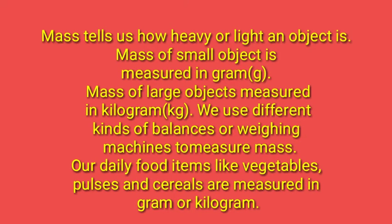Now we will see mass. Mass tells us how heavy or light an object is. Mass of small objects is measured in grams, and mass of large objects is measured in kilograms. We use different kinds of balances or weighing machines to measure mass. Our daily food items like vegetables, pulses, and cereals are measured in grams or kilograms. Mass is the quantity that tells us how heavy or light an object is.